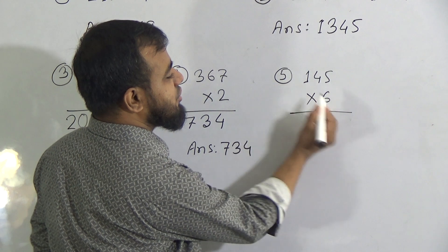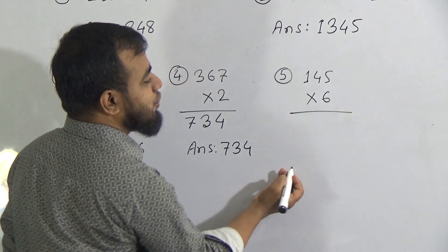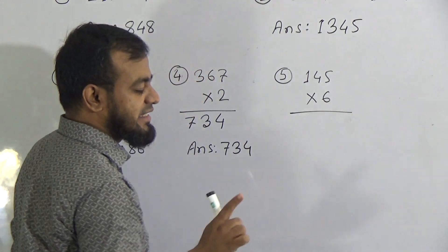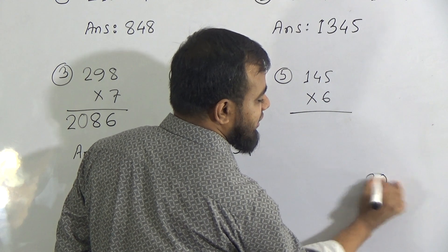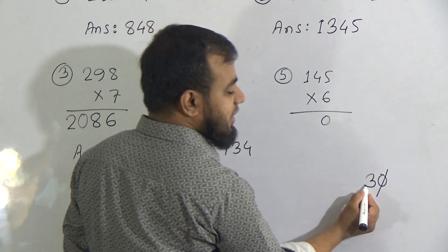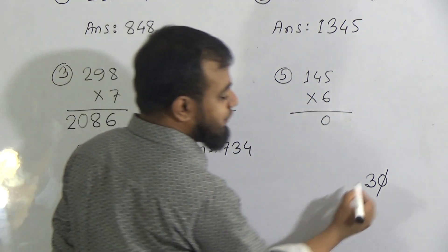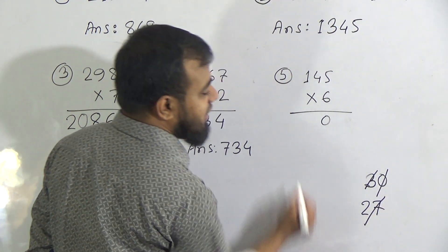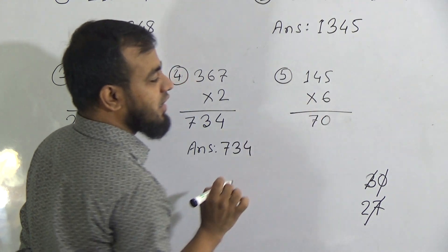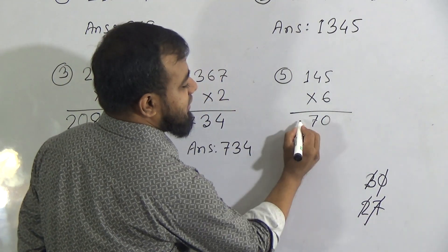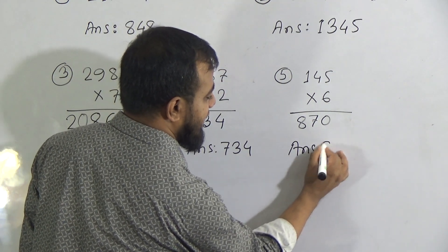The last question, number 5, is 145 multiplied by 6. Using the times table of 6: 6 5's are 30 — write 0 in the 1's place, carry 3. Then 6 4's are 24, and 24 plus the carried 3 makes 27 — write 7 in the 10's place, carry 2. Finally, 6 1's are 6, and 6 plus the carried 2 makes 8, written in the 100's place. Our answer is 870.